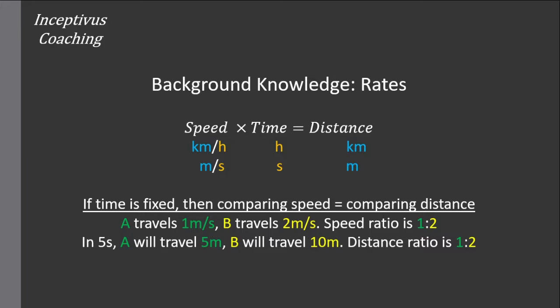So for example, let's say there are two people. Person A travels at one meter per second, whereas person B travels at two meters per second. The speed ratio of A to B is one to two. So that means for every meter A travels, B will travel two meters.